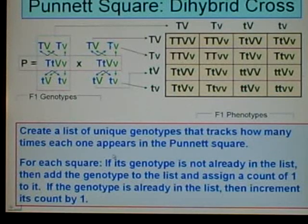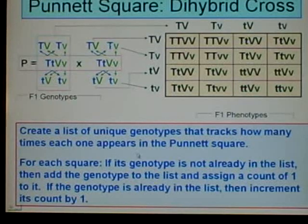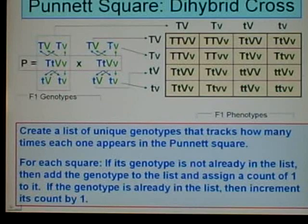Okay, how do we do that? We're going to create a list of unique genotypes that tracks how many times each one appears in the Punnett square. So for each square, we're going to process them in order. For each square, if its genotype is not already in the list, then add the genotype to the list and assign a count of 1 to it. If the genotype is already in the list, then increment its count by 1.